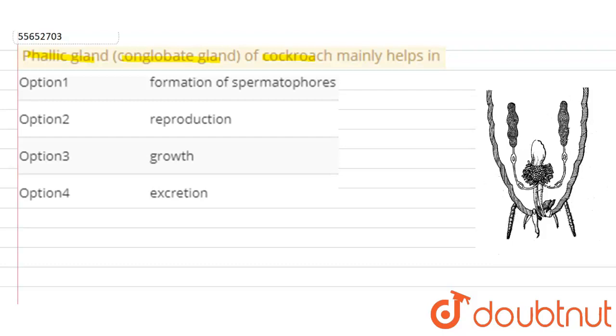Now we know that cockroach is a dioecious or unisexual animal, which means male and female reproductive systems are present in different individuals.